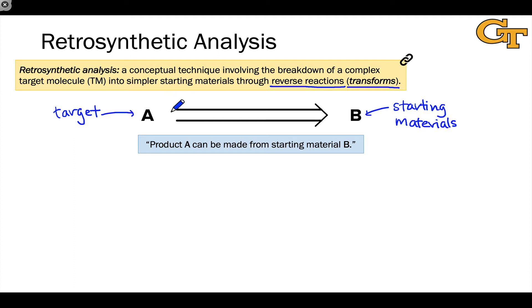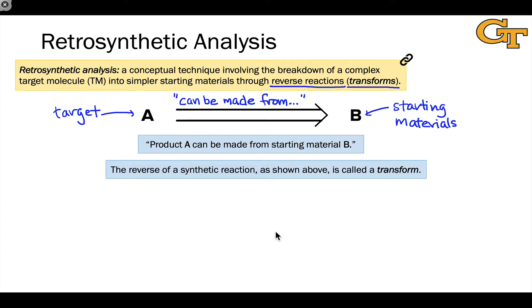Instead of doing that, we use an arrow with a special style with two lines and an empty space between them like this, called a retrosynthetic arrow. And that arrow essentially stands in for the words, can be made from. So we can read this entire figure as the target A or product A can be made from starting material or starting materials B. And this entire depiction of the reverse conversion of the target back to the starting materials is what we call a transform.